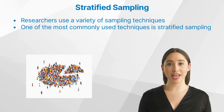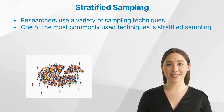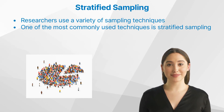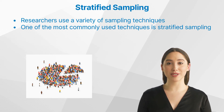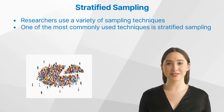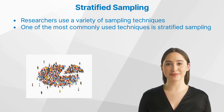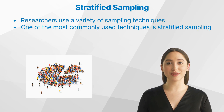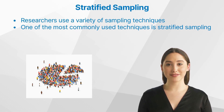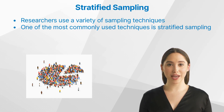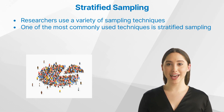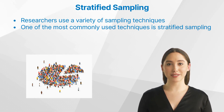Clinical research helps to discover new treatments and therapies for various diseases. In order to ensure that the results of clinical research are accurate and representative of the population being studied, researchers use a variety of sampling techniques. One of the most commonly used techniques is stratified sampling. In this video, we will discuss what stratified sampling is and how it is used in clinical research.